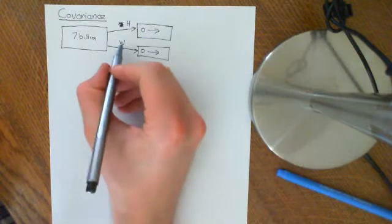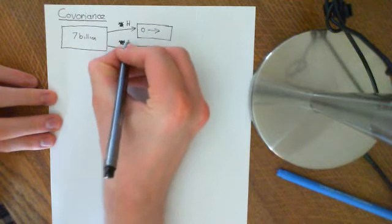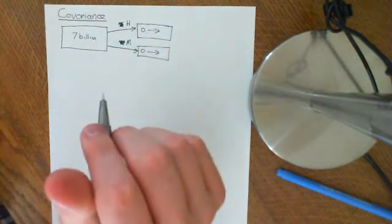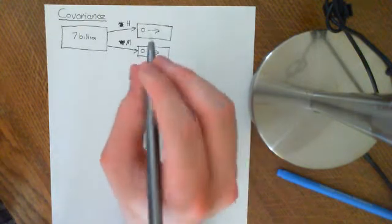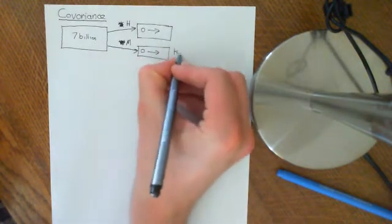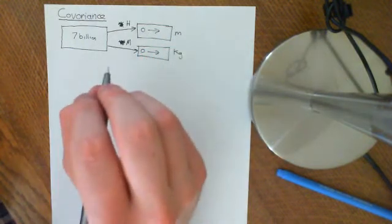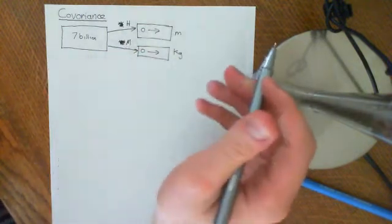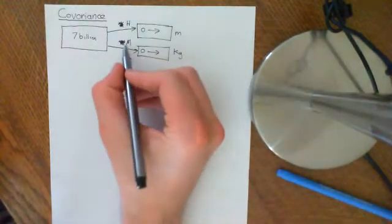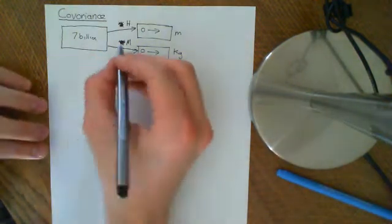We'll use mass rather than weight because weight should strictly be in newtons if you're a physicist — mass is constant no matter what planet you're on or what gravitational field you're in. So we'll have mass in kilograms and height in metres.